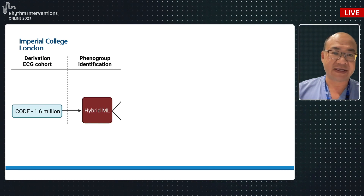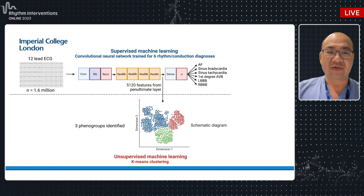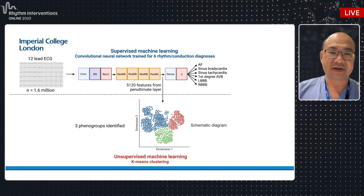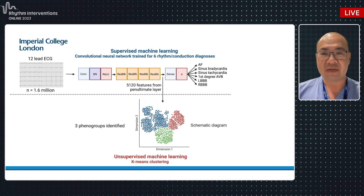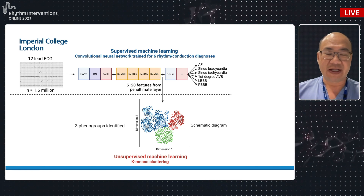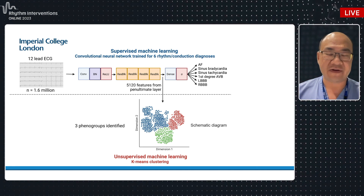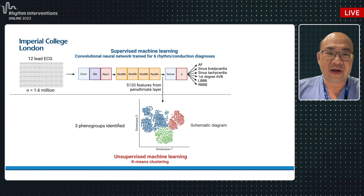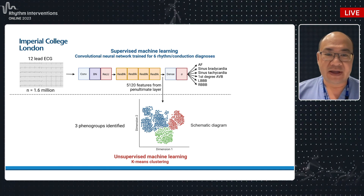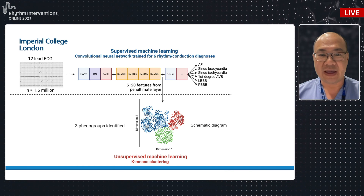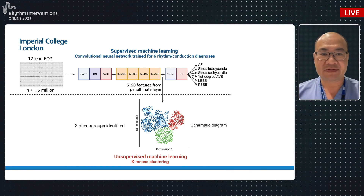To do this, we took 1.6 million ECGs from Brazil and used an existing model that classifies ECGs into six diagnoses: AF, bradycardia, tachycardia, first degree AV block, left and right bundle branch block. But instead of using the outputs of the model, we went into the black box and extracted the 5,000 features the model has learned over many rounds of examining millions of ECGs. We then asked whether these features are biologically important and meaningful.